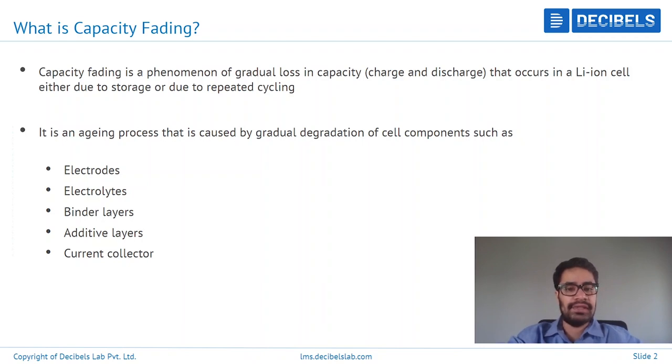Capacity fading is a situation in which there is permanent and gradual loss of capacity of the cell, that can occur either due to storage or due to cyclic usage.